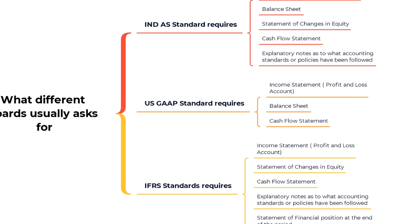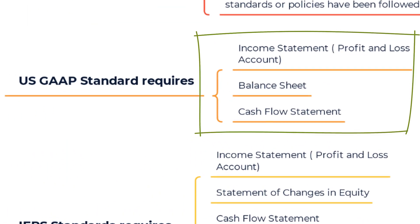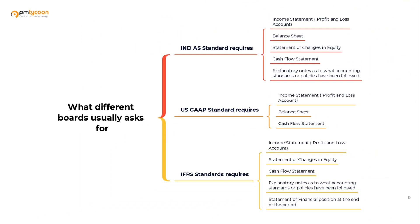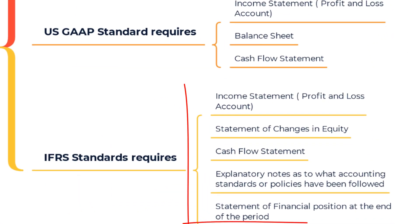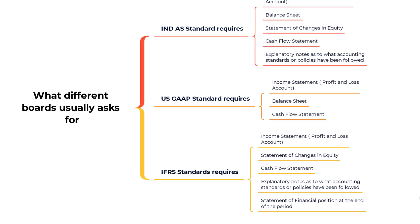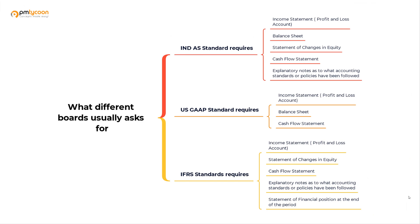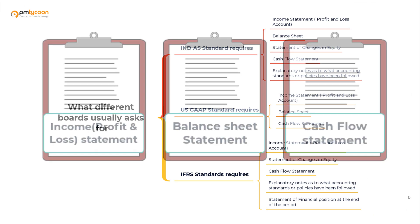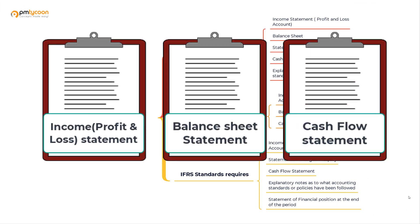Similarly, US GAAP requests three statements: the income statement, balance sheet, and cash flow statement. Looking at European countries' standard, IFRS, they ask for five statements to be prepared at the end of the accounting period. Most of them are asking for the profit and loss statement, cash flow statement, and a balance sheet.